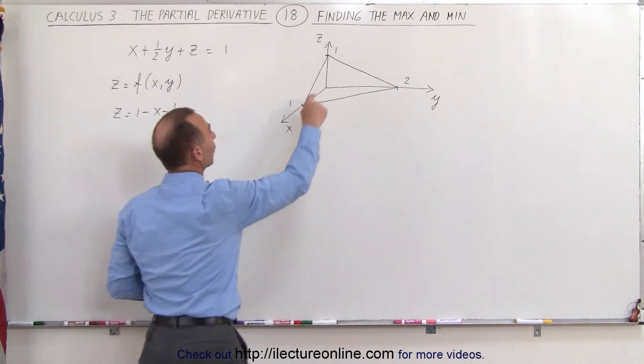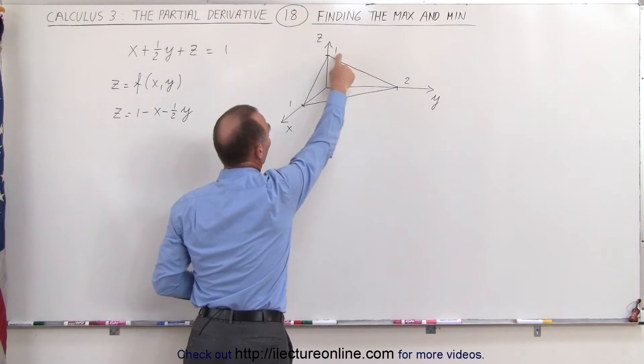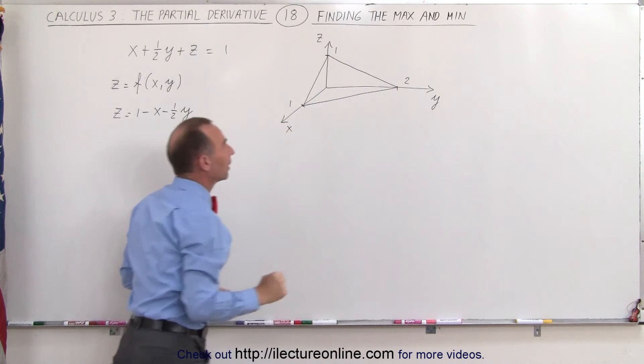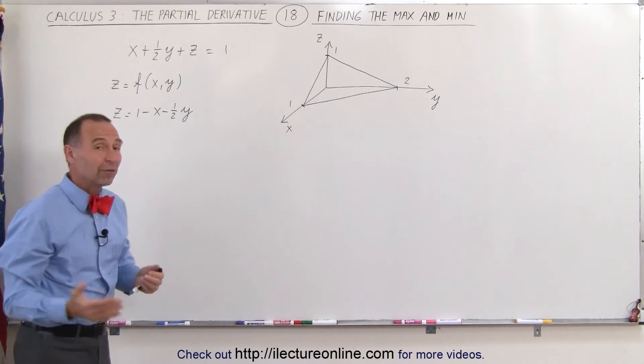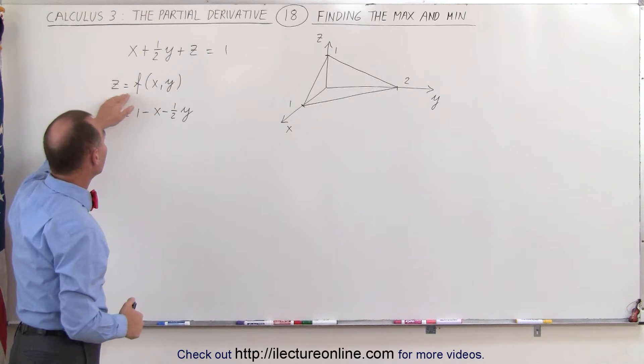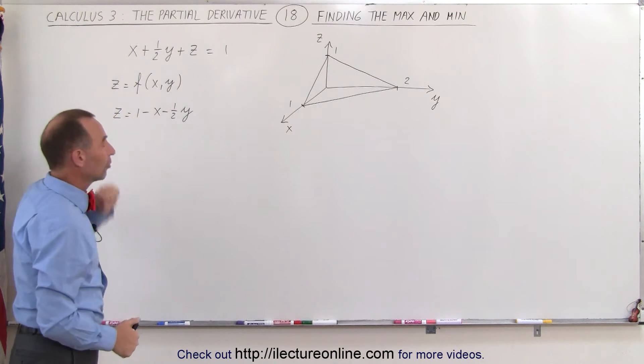If you find the points where it crosses the z-axis, the x-axis, and the y-axis, there's 1, 1, and 2, or I should say x-axis and y-axis there. And then if you write the function in terms of z is a function of x and y, then we solve this equation for z, and it looks like this.